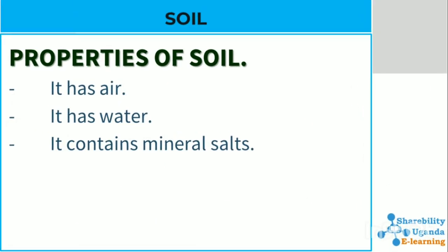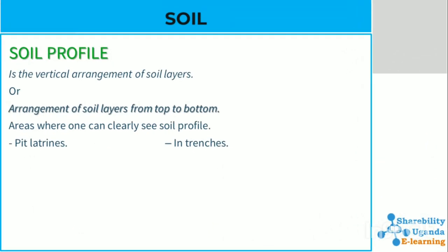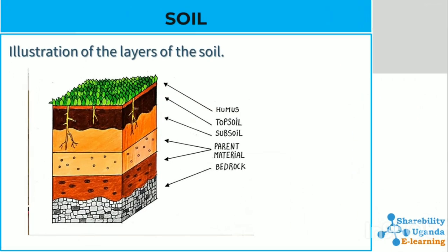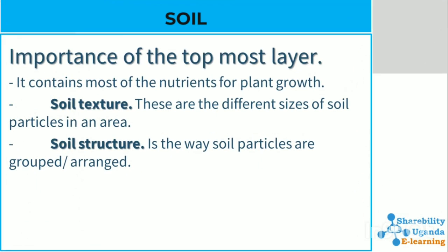Properties of soil: it has air, has water, and contains mineral salts. The soil profile is the vertical arrangement of soil layers. Areas where one can clearly see the soil profile include trenches and pit latrines. An illustration of the layers of the soil shows humus at the top, followed by topsoil, then subsoil, then parent material, and lastly the bedrock. The topmost layer contains most of the nutrients for plant growth. Soil texture refers to the different sizes of soil particles in an area, and soil structure is the way soil particles are grouped or arranged.